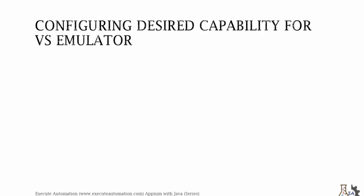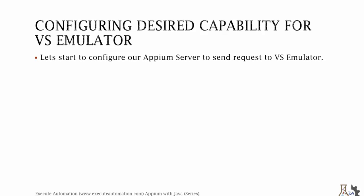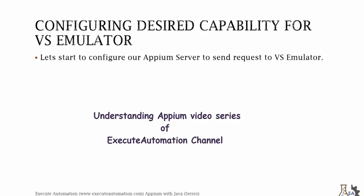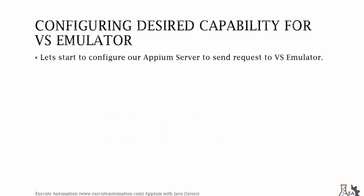Alright, let's flip back to the slides. For configuring the desired capabilities for the Visual Studio emulator, first we need to set the desired capabilities for our Appium server to send the request to the Visual Studio emulator. As discussed in the understanding Appium video series, the Appium server contacts the emulator to perform operations. We're not going to use the out-of-the-box Android emulator — we need to tell the Appium server to look for the Visual Studio emulator specifically. We have to make two changes: configure the Appium server and update our client code.